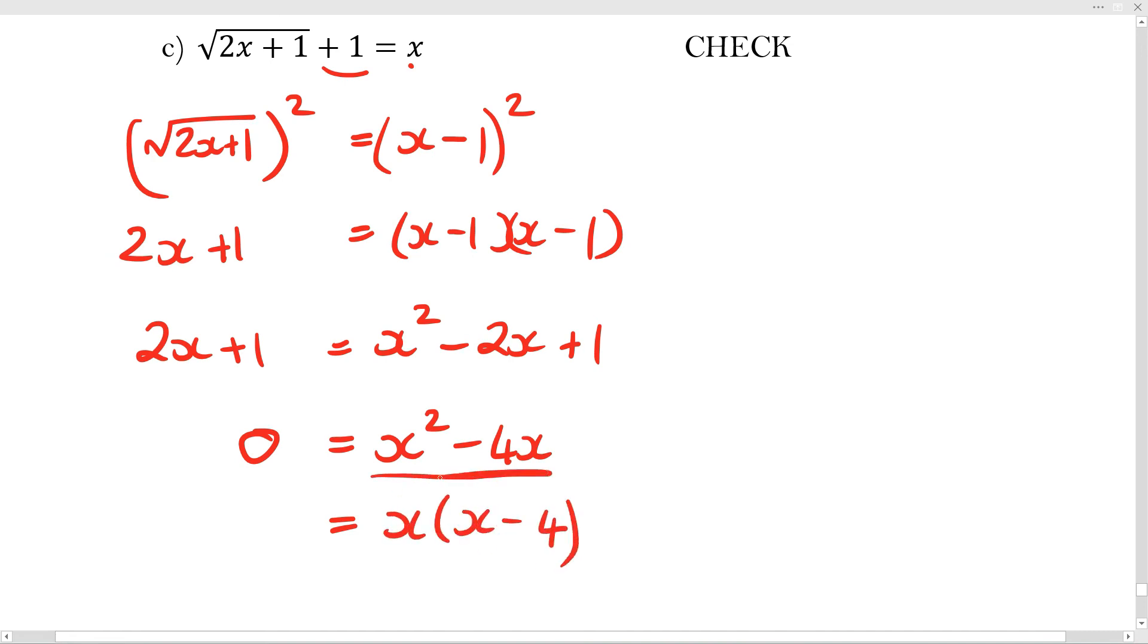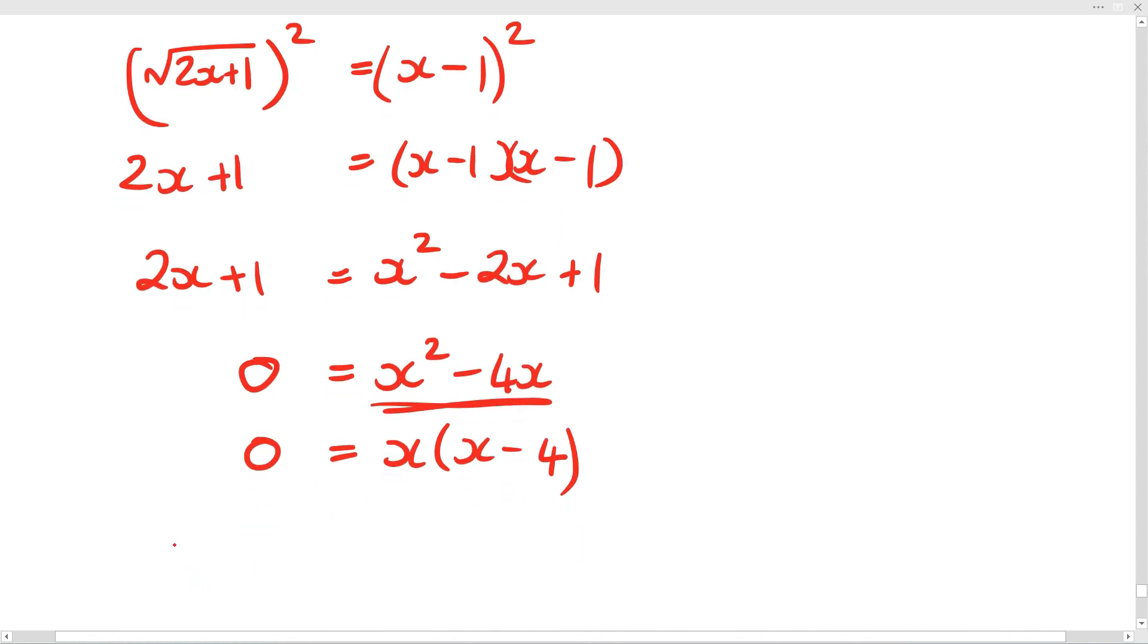So I then need to remember that this has a common factor and that's the way this one works. A lot of people somehow turn this into a dots, which means you really get funny answers. So x equals 0 or x equals 4. Now for the check.